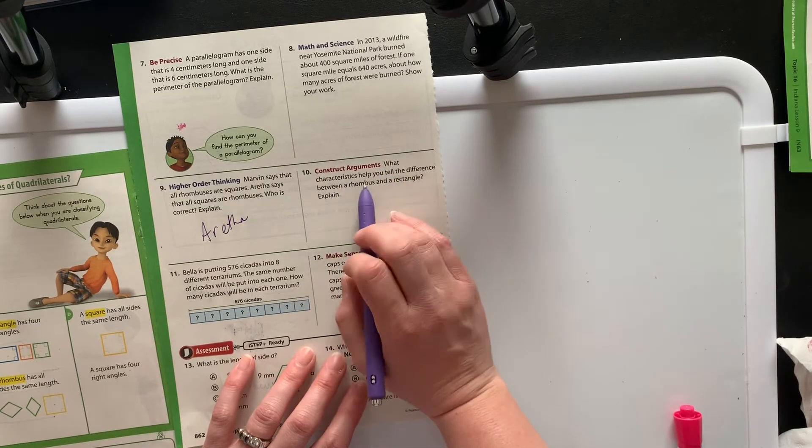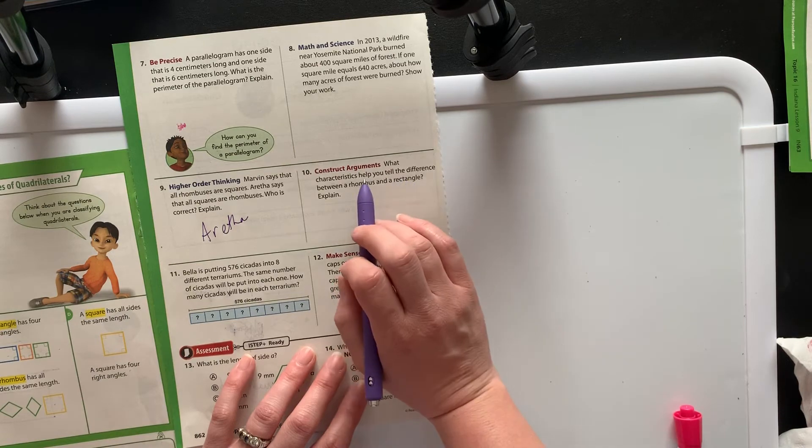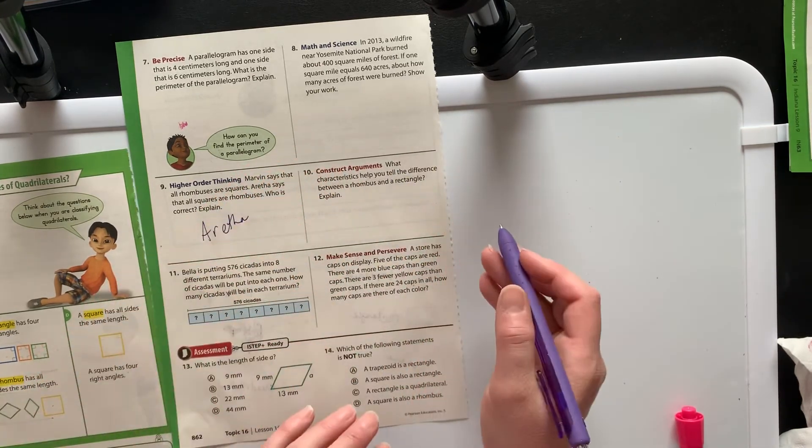Construct arguments. What characteristics can help you tell the difference between a rhombus and a rectangle? We're looking for side length, the angles, and those parallel lines.